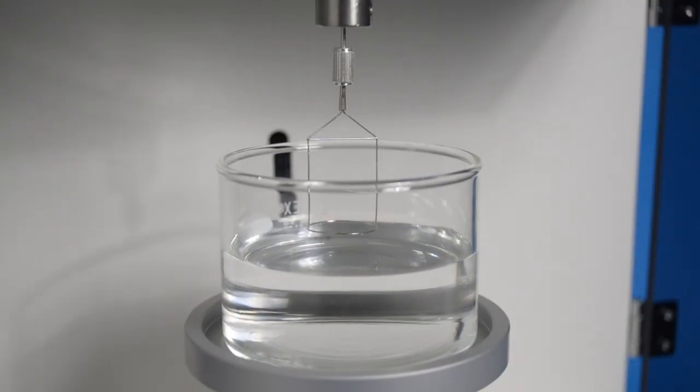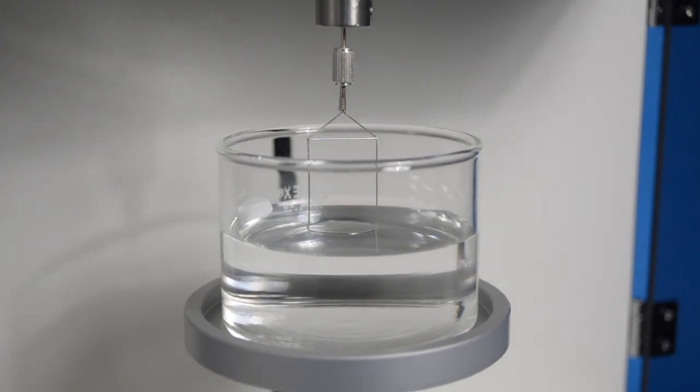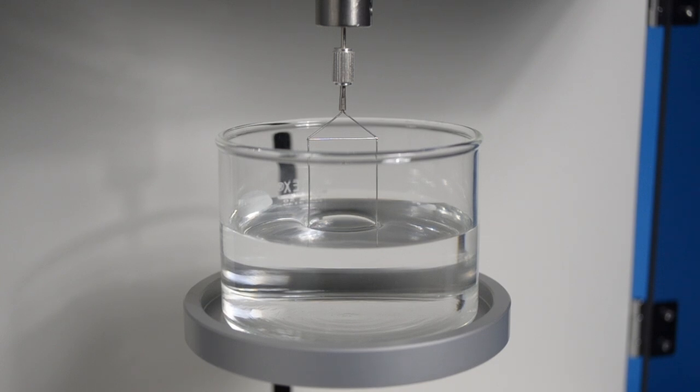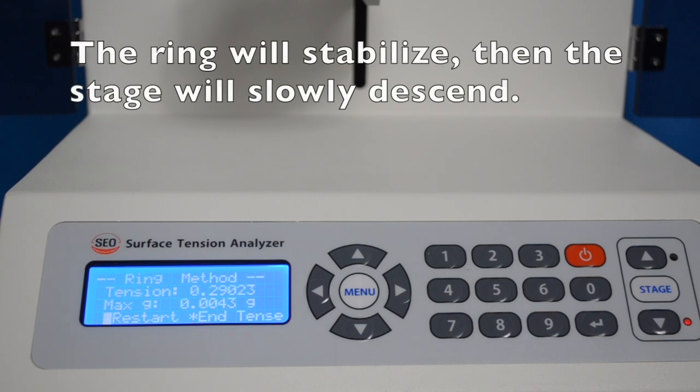With this, the instrument automatically moves the stage up so that the sample passes up through the ring and the ring is totally submerged. At this point, the ring becomes stabilized in the sample.